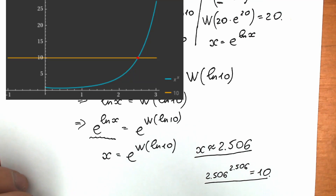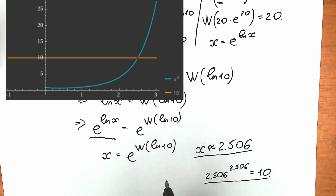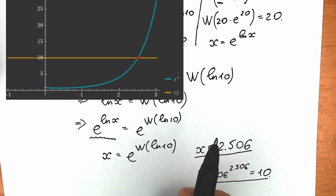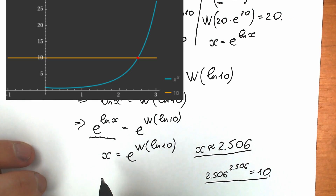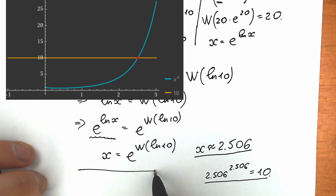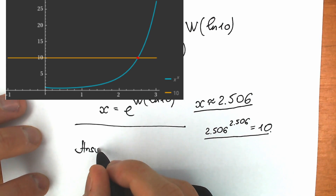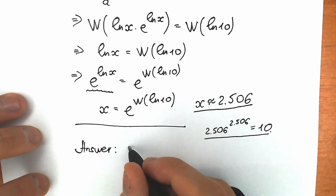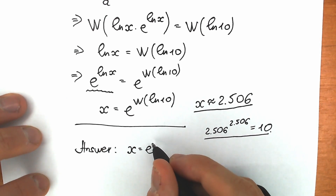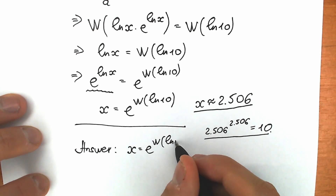You can also see a graph for this question, because a lot of students prefer a geometric perspective — they like to see the point of intersection. So let's write our final answer: x equals e to the power Lambert W of natural log of natural log 10.